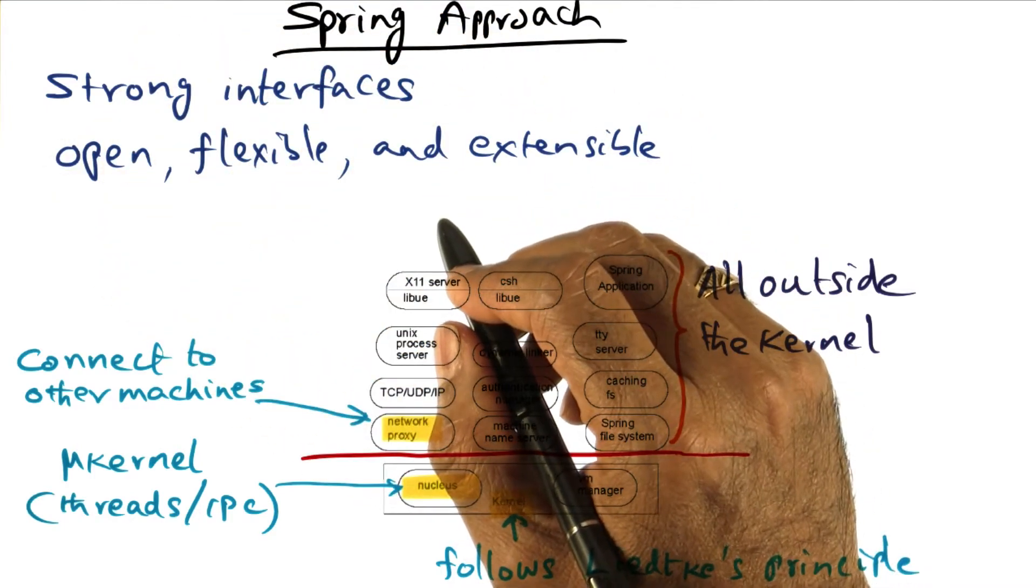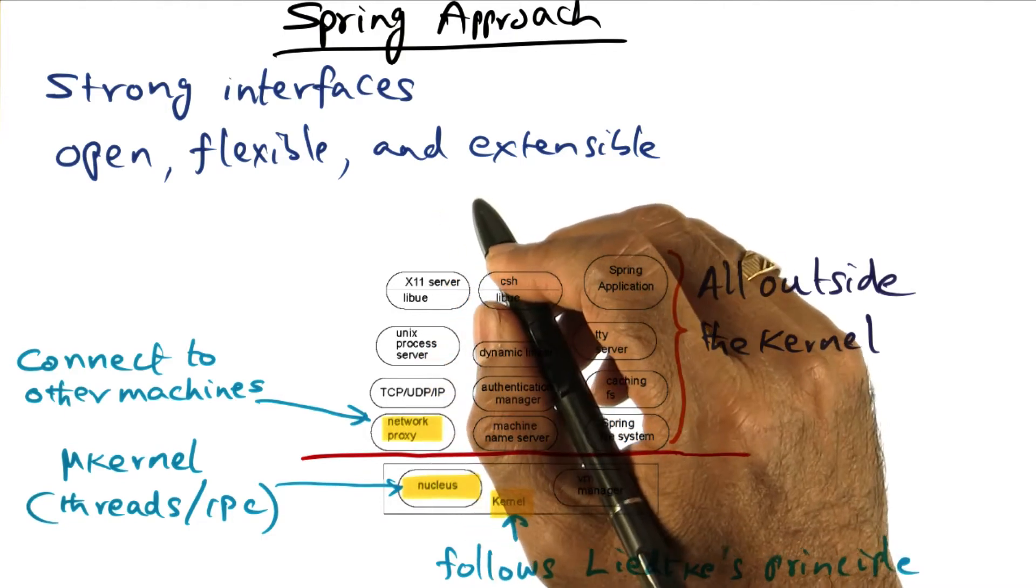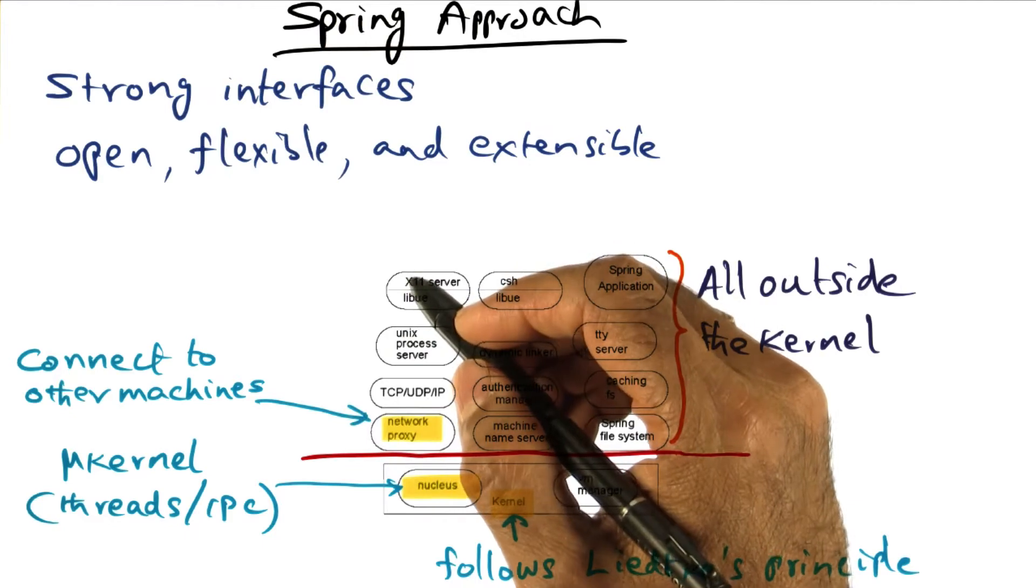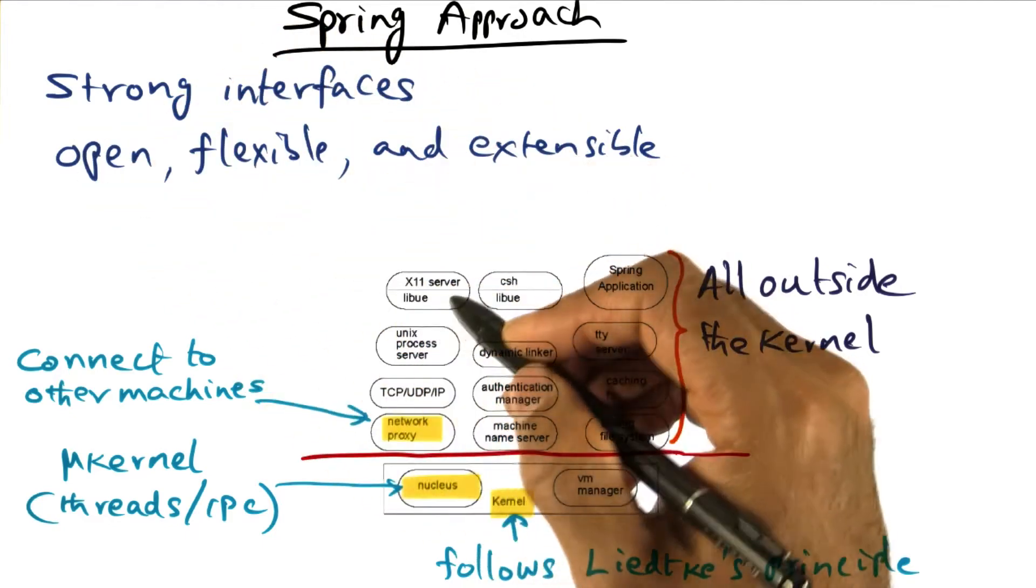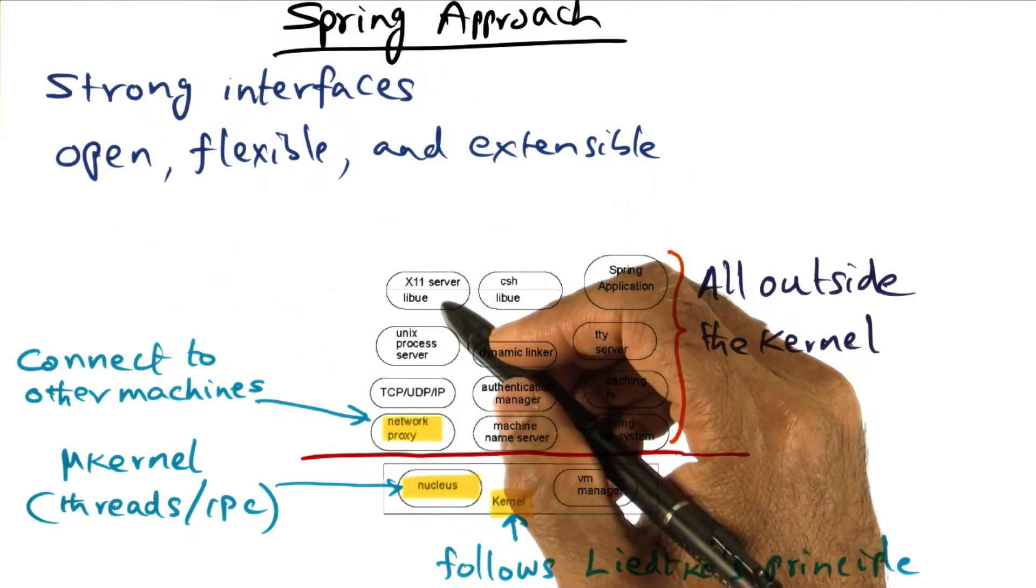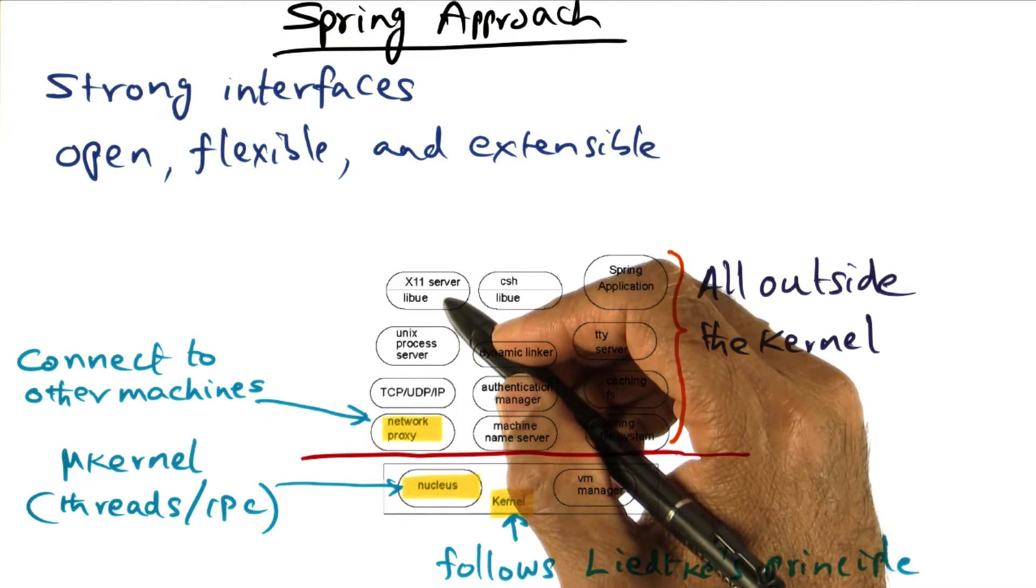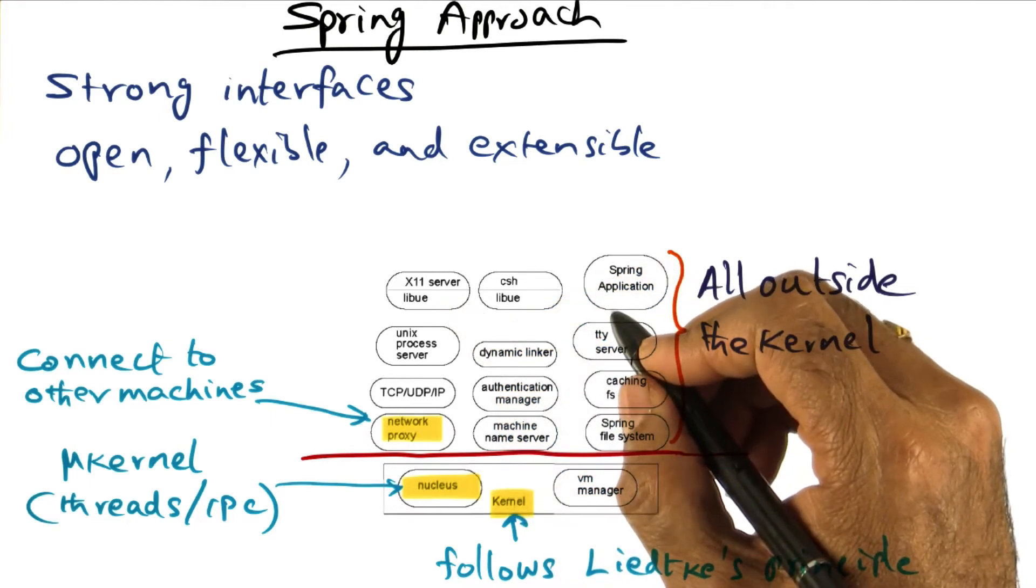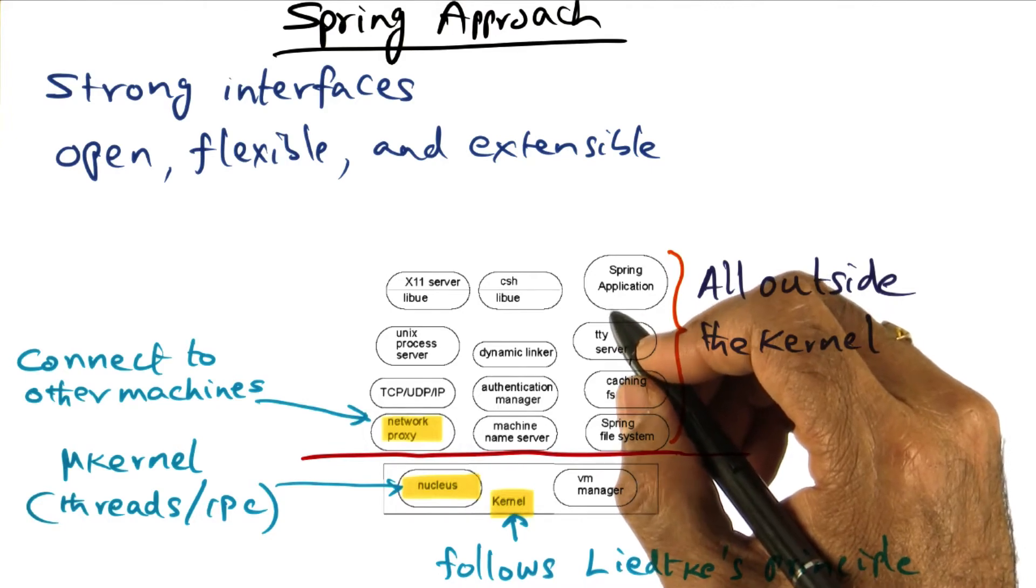And at the same time, you want to maintain the integrity of your subsystems, and that's why strong interfaces are extremely important. Being open and flexible also suggests that you don't want everything to be written in one language. You don't want to be tied to a particular language for implementing all the system components.